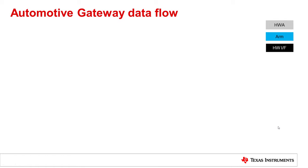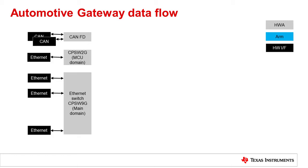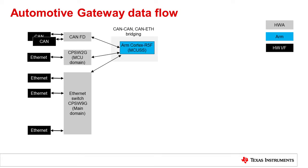We will now take a closer look at how the functionality required for the gateway application can be mapped to the various peripheral subsystems and processing blocks available on the Jacinto 7 platform. The CAN-FD modules on the Jacinto 7 platform are used to send and receive CAN traffic — there are two such instances in the safety MCU domain and several CAN-FD instances in the main domain. Ethernet traffic is handled through a multi-port integrated Ethernet switch and an additional single-port Ethernet module in the MCU domain. For the CAN-Ethernet bridging application, we leverage the DMA data movement capabilities provided by the Jacinto 7 platform to efficiently handle this from a real-time R5F core. Runtime statistics like bridging latency and CPU load information are reported over the UART console.